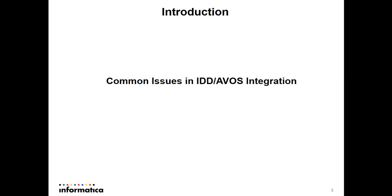Coming to the introduction, we have seen many cases where tasks are not getting generated either in ActiveVos, or even though they are present in ActiveVos they are not visible in IDD. This is a very common issue that can happen for multiple reasons. This video KB speaks about the various configurations which need to be checked on both the ActiveVos side and IDD to resolve these issues. The common issues are: IDD manual tasks not getting generated, or ActiveVos tasks exist but are not visible.